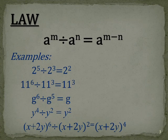This brings us to our law that a to the power of m divided by a to the power of n is equal to a to the power of m minus n.